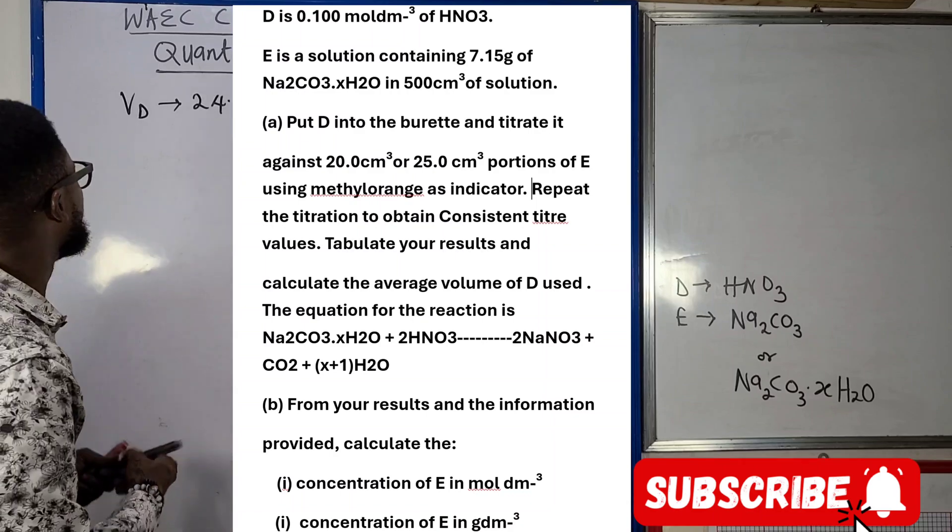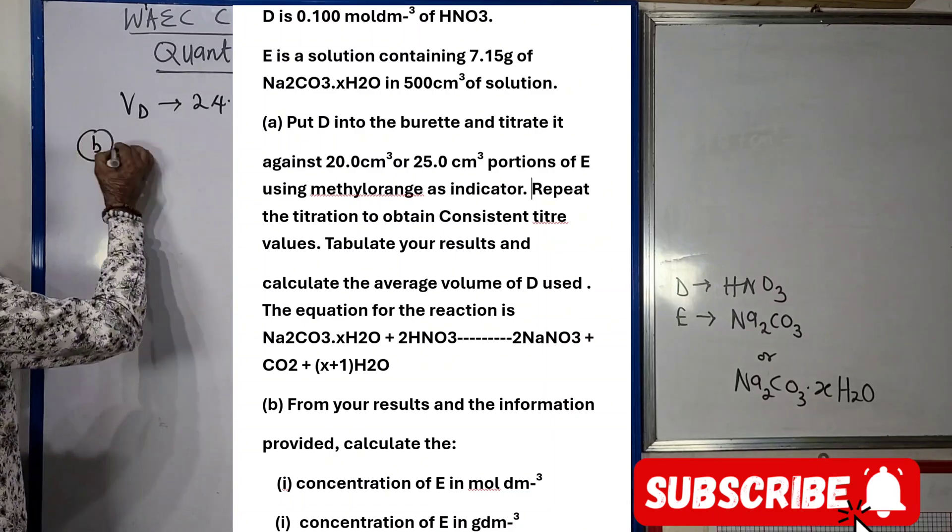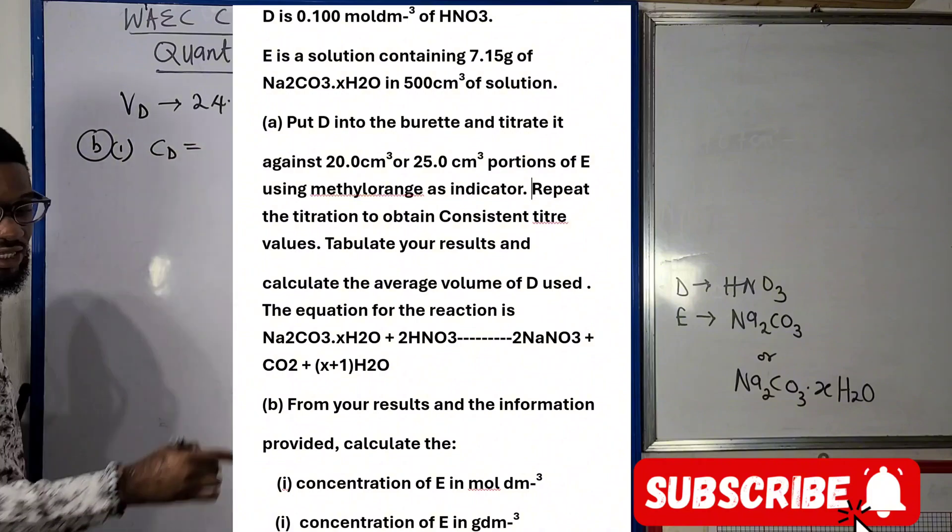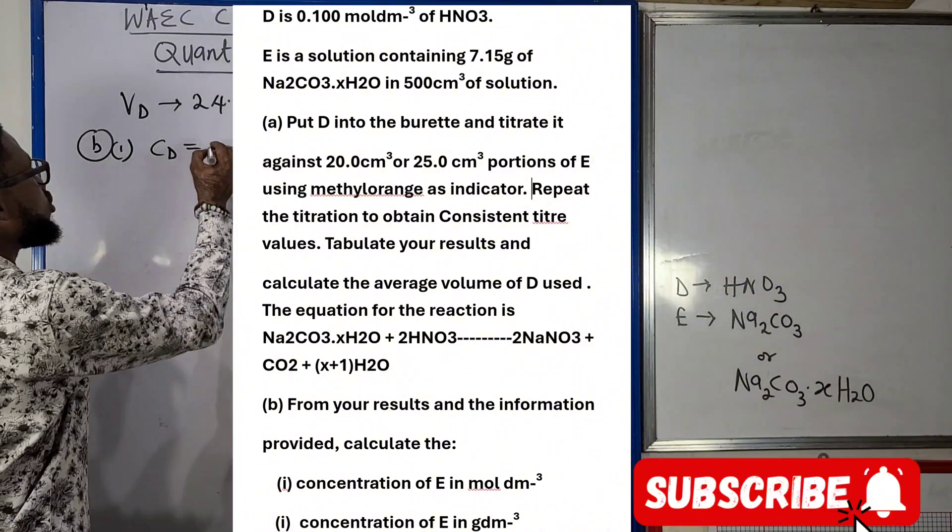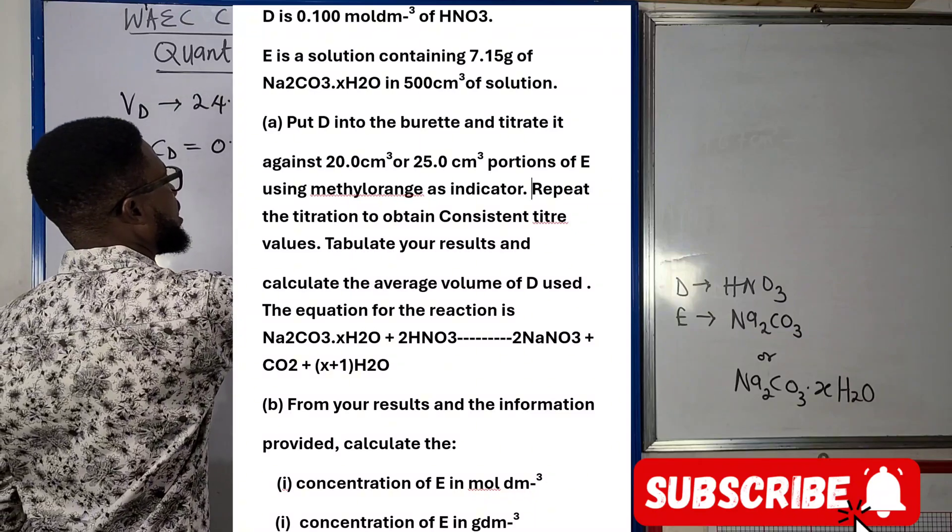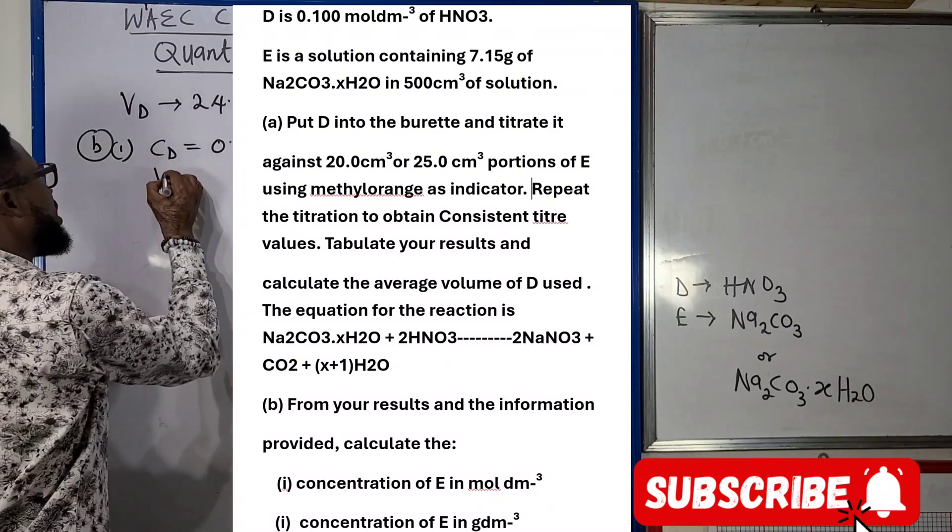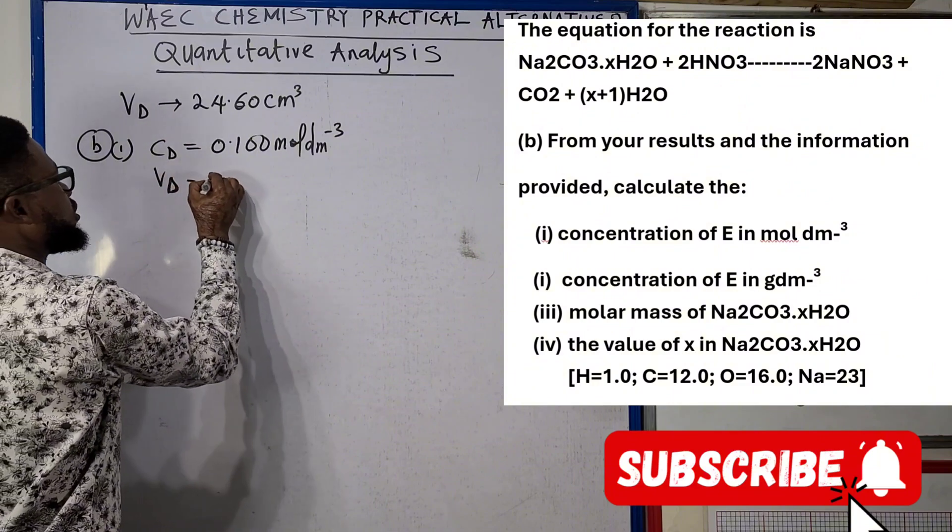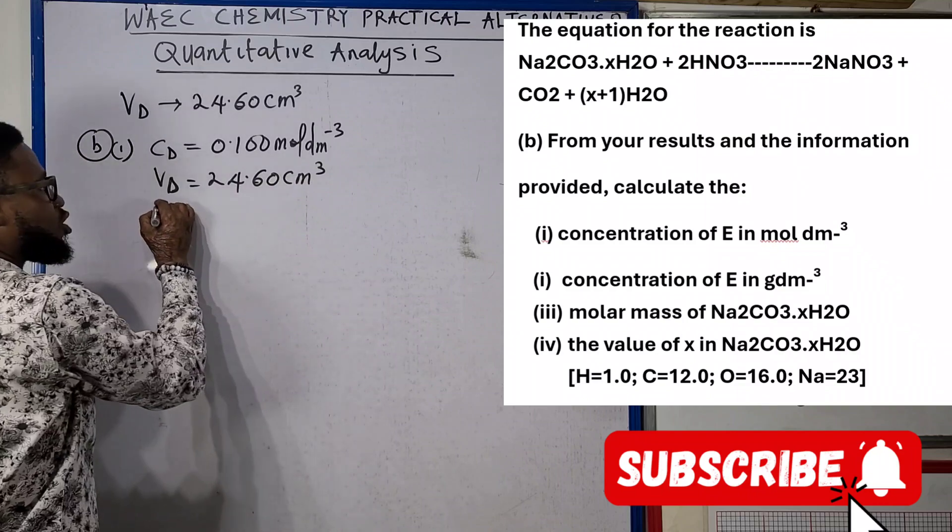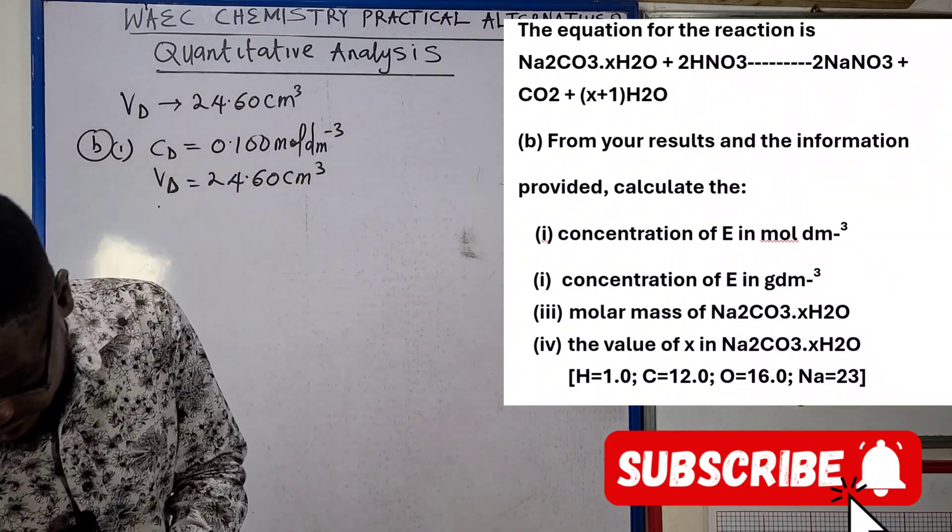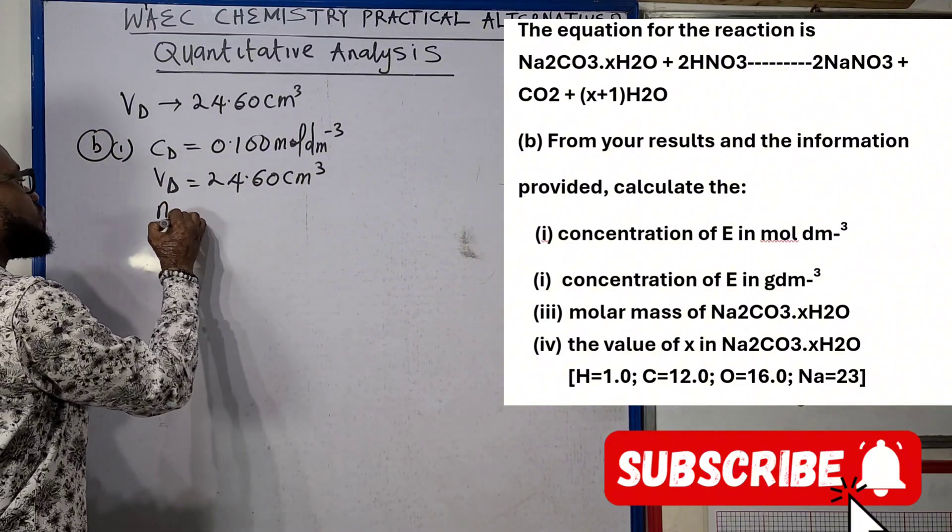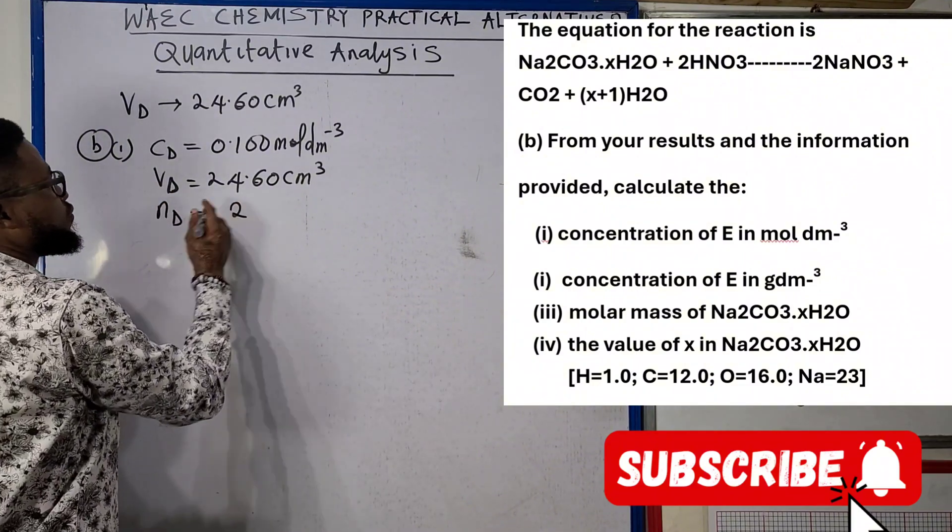From your results and the information provided, calculate the concentration of E in mole per dm³. So this is going to be B1. We are looking for our concentration of D. As you can see in the question, CD is 0.100 mole per dm³, our VD is 24.60 cm³, and according to the equation we've been given, the number of moles of D is actually 2 from equation.